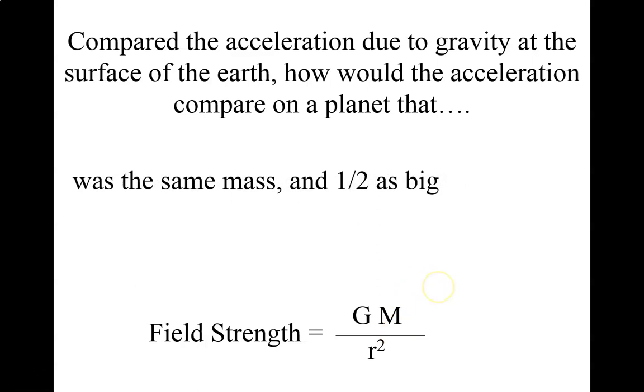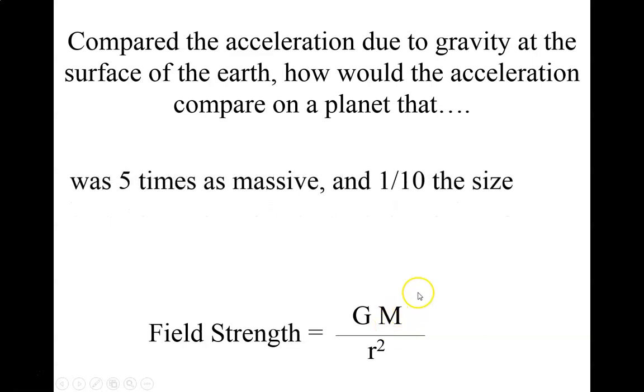Let's say we had the same mass, but now it's one half as big. So picture the Earth shrinking to half the size, but with the same mass. So it's getting twice as dense. What would happen to the force of gravity? Well, now I'm twice as close, or my radius is one half. So if I take one half and I square it, I get one fourth. And what do you get if you divide by one fourth? You get four times. So the gravity on that planet would be four times as strong as compared to the Earth.